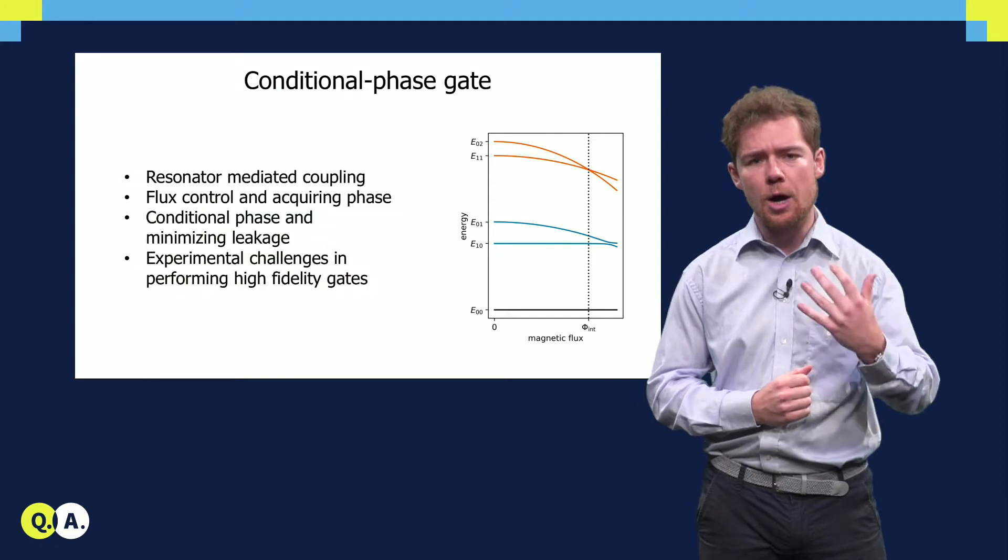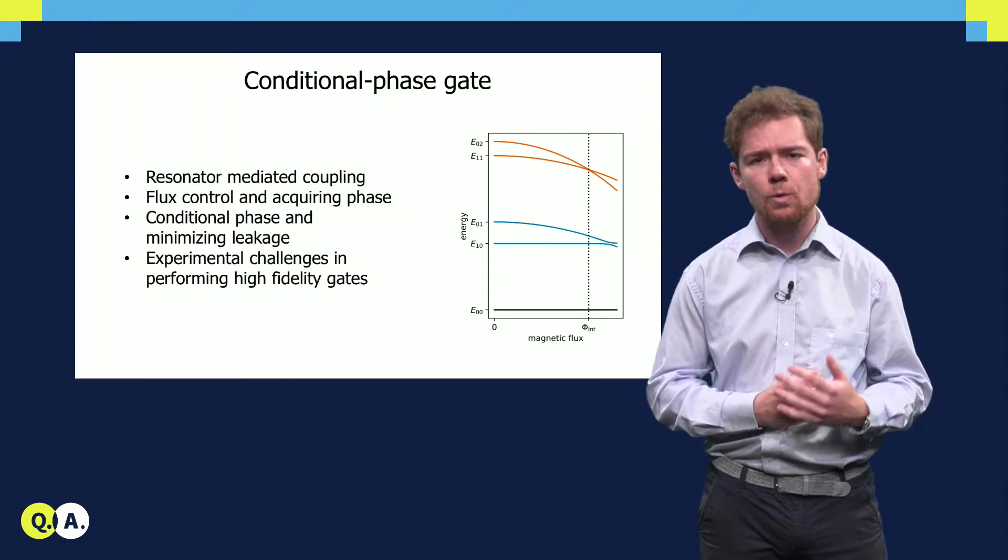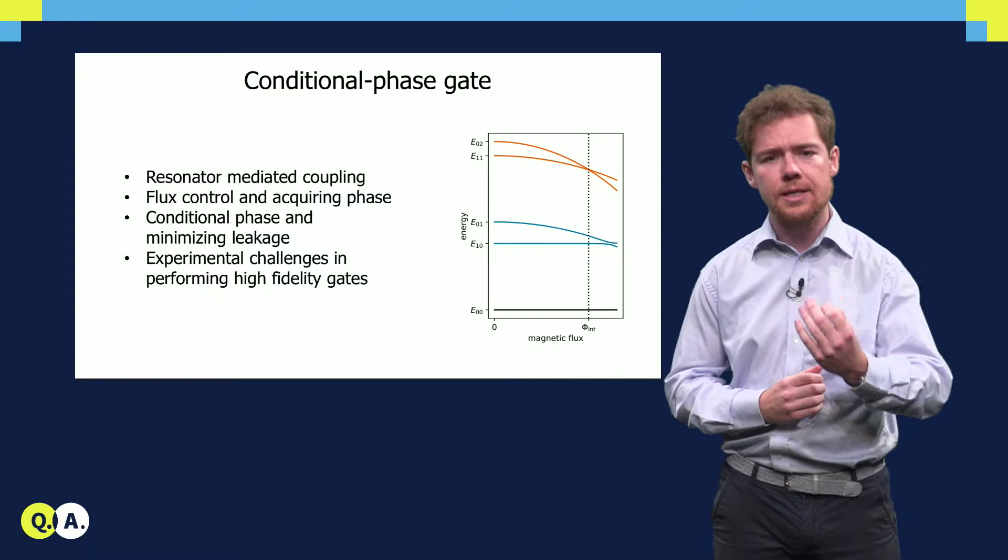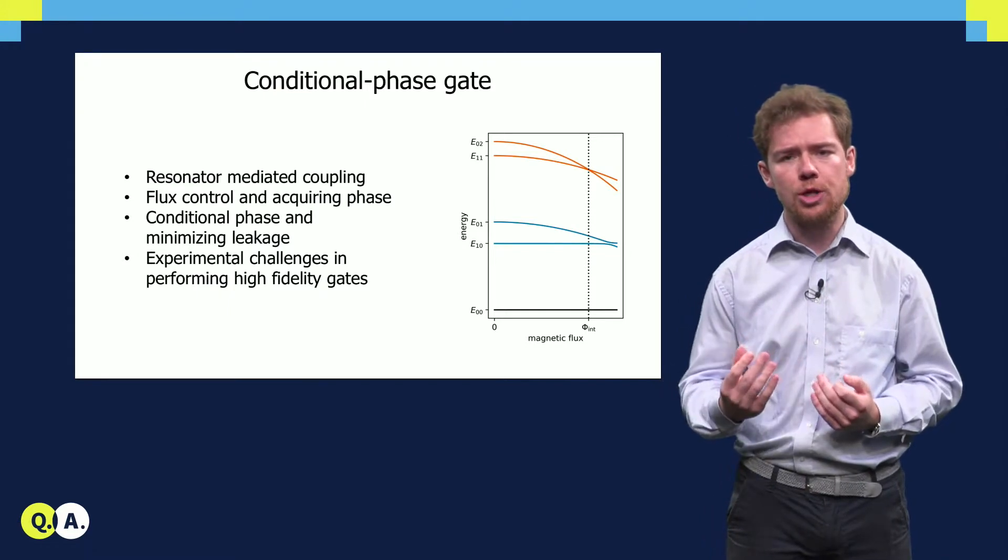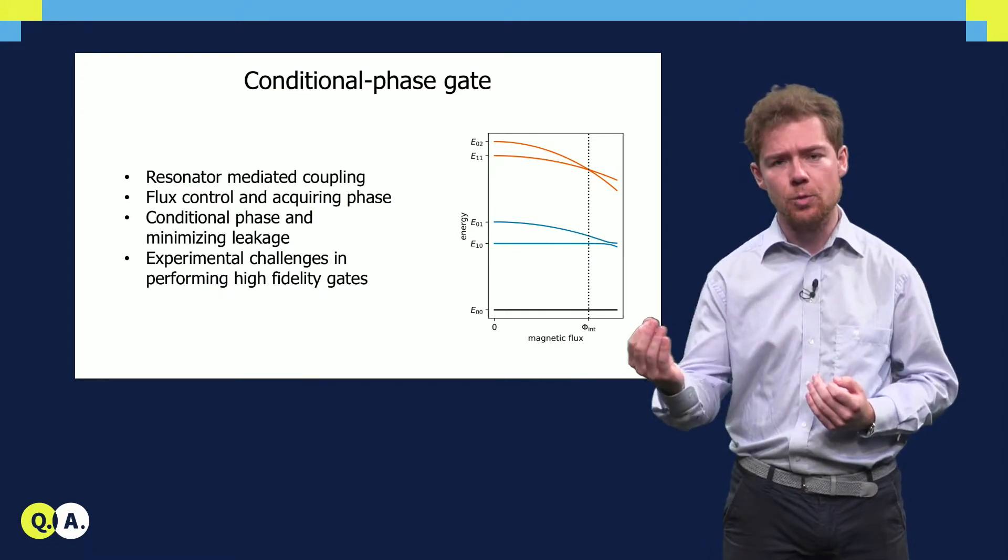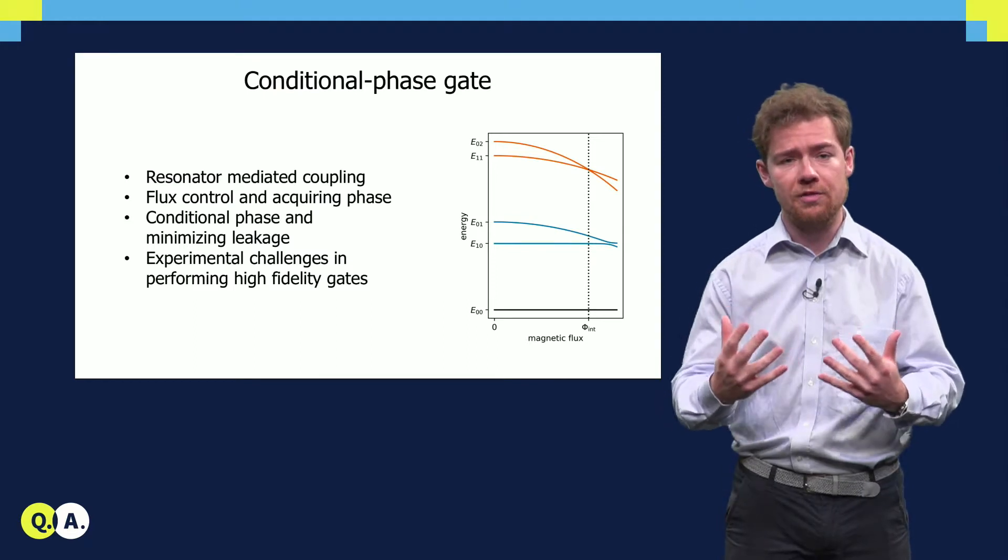To understand how to perform such a C-phase gate, we will look at what mediates the interaction, how qubits can be tuned in and out of resonance with an interaction, and why this causes the qubits to accumulate phase.